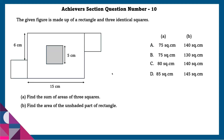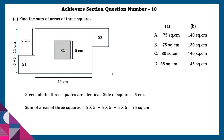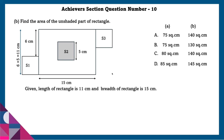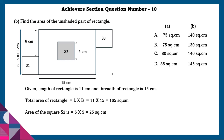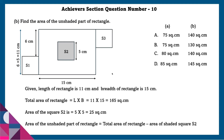Achieve section question number 10: The given figure is made up of a rectangle and 3 identical squares. Find the sum of areas of 3 squares. All 3 squares are identical with side 5 centimeters, so sum of areas of 3 squares is 75 square centimeters. Second part: find the area of the unshaded part of the rectangle. Length is 11 centimeters and breadth is 15 centimeters, so total area is 165 square centimeters. Area of square S2 is 25 square centimeters. Area of the unshaded part of the rectangle is 165 minus 25, which equals 140 square centimeters.